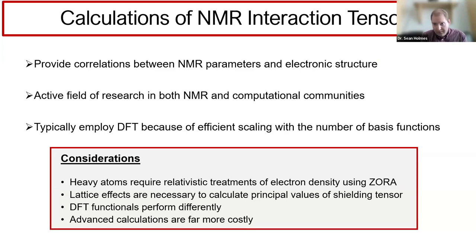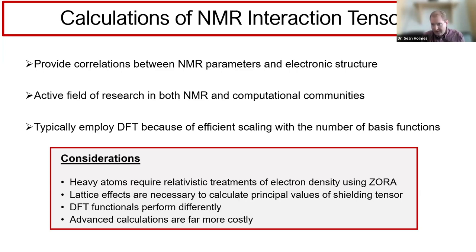When calculating magnetic shielding or EFG tensors for materials containing heavy atoms, there are three critical considerations. First, you must include relativistic effects, generally at the spin-orbit level. Second, you must account for intermolecular effects, which can have very large impacts on predicted magnetic shielding tensors. Third, you need to consider the type of DFT functional—pure DFT methods like GGA, or so-called hybrid models—with increasing computational cost as calculations become more advanced.